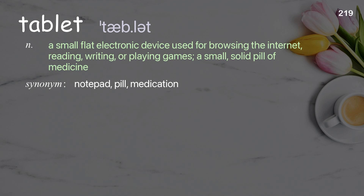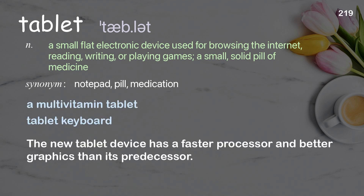Tablet: a small flat electronic device used for browsing the internet, reading, writing, or playing games; a small, solid pill of medicine. Examples: a multivitamin tablet; tablet keyboard. The new tablet device has a faster processor and better graphics than its predecessor.